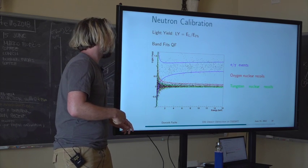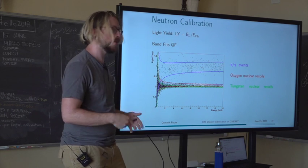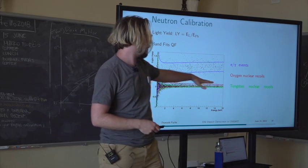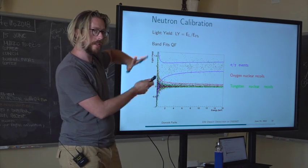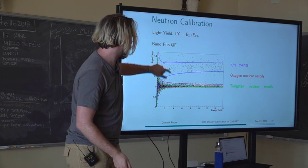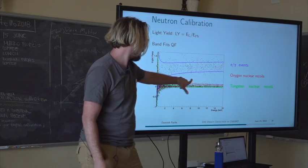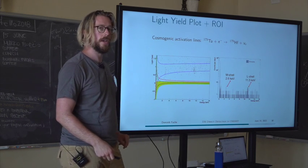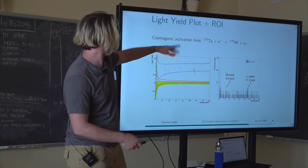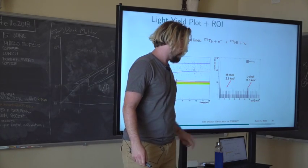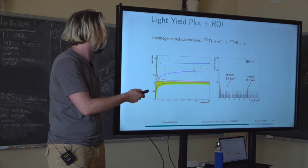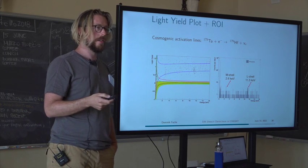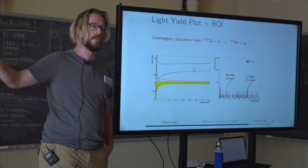There's a second calibration: the neutron calibration. Neutrons create many nuclear recoils, so we use a neutron source to populate our nuclear recoil bands in the light yield plot, then use those data to run a band fit that fixes the position of the bands. Those band positions are then left unchanged when we put in the actual dark matter data. A nice feature in the first run was observing cosmic activation lines at a few keV, which helped confirm our calibration done with the much higher-energy radioactive source.